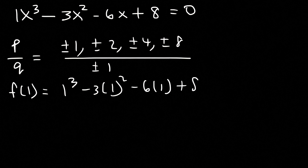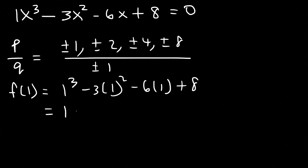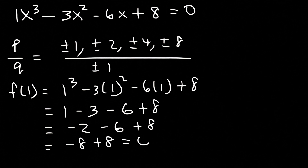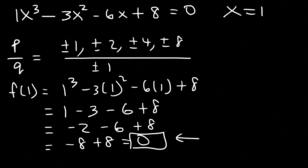So that's 1 to the third minus 3 times 1 squared minus 6 times 1 plus 8 — let's see if it's equal to 0. 1 to the third is 1, 3 times 1 squared is 3, and then we have 6 plus 8. So 1 minus 3 is negative 2, and negative 2 minus 6 is negative 8. Negative 8 plus 8 is equal to 0. Because it's equal to 0, that means x is equal to 1 is one of the answers.